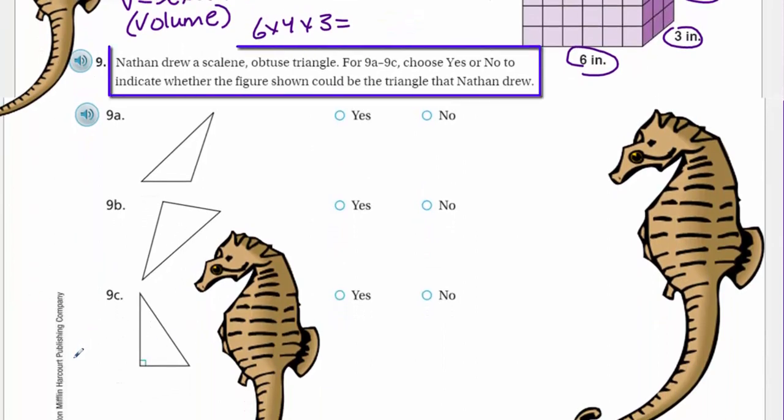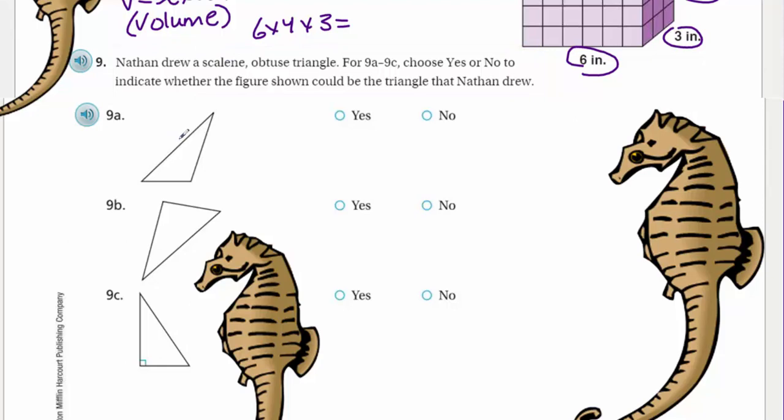More seahorses. Nathan drew a scalene obtuse triangle. For nine a through nine c, choose yes or no to indicate whether the figure shown could be the triangle that Nathan drew. Let me look at this. First thing I'm gonna say is I know that a scalene triangle has no equal sides, no congruent sides, no congruent angles. But it says it's a scalene obtuse. An obtuse triangle is a triangle that has an angle that's obtuse - an obtuse angle is an angle that is larger than a 90 degree angle. I'm looking at these - first thing I'm saying, well, this one here I see two angles at nine c. They look like they're acute angles and this is exactly 90, so it can't be this one here. This is like a right triangle, I would say. So this one's no.